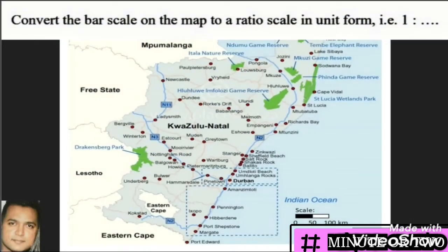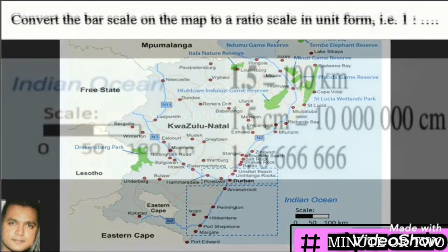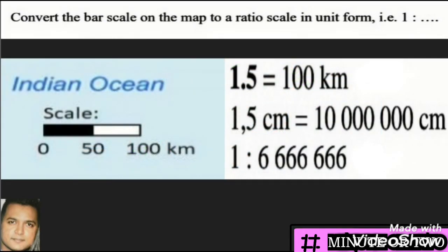These questions are taken from the Department of Education 2020 booklet. We are given a map with a bar scale, and the question states: convert the bar scale on the map to a ratio scale in the form of 1 is to something.